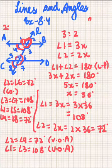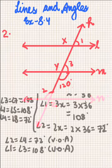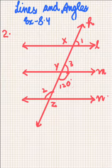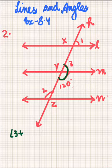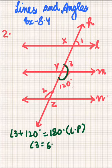Now in Question Number 2, we are given that in the figure L, M, N are parallel lines intersected by transversal P at X, Y, Z respectively. Find Angle 1, 2 and 3. It is very simple if we observe that these two angles are making a linear pair. So Angle 3 plus 120 degrees will be equal to 180 degrees. So Angle 3 will be equal to 60 degrees.